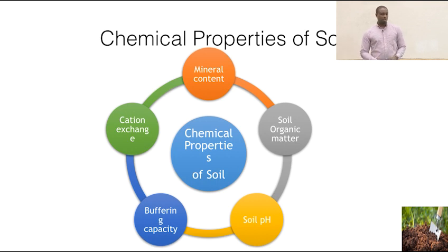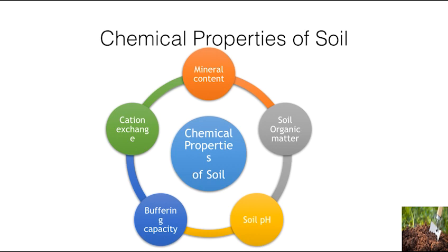So when we're talking about the chemical properties of soil, we are basically talking about the interactions between these five main factors: mineral content, organic matter, soil pH, buffering capacity, and cation exchange capacity.